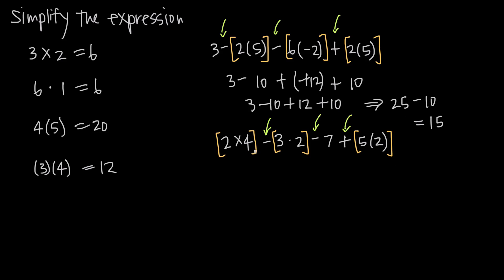Now if we do our multiplication first, leaving our addition and subtraction in between: 2 times 4 gives us 8, keep our subtraction sign, 3 times 2 gives us 6, keep our subtraction 7, keep our addition, and 5 times 2 is 10. Now we can do the addition and subtraction moving left to right: 8 minus 6 is 2, 2 minus 7 is negative 5, negative 5 plus 10 is positive 5. So our final answer is positive 5.